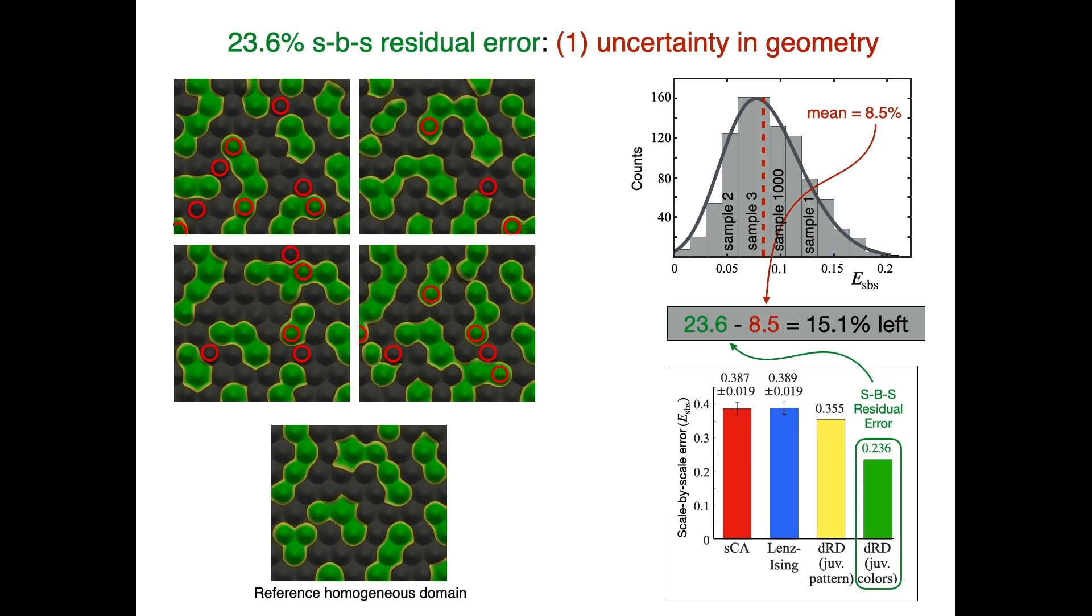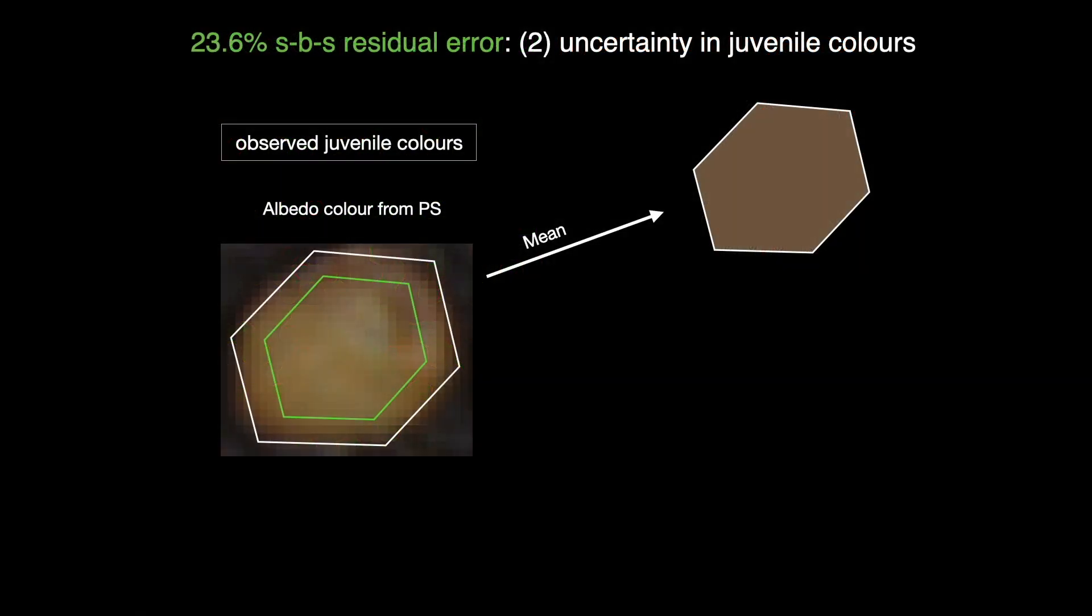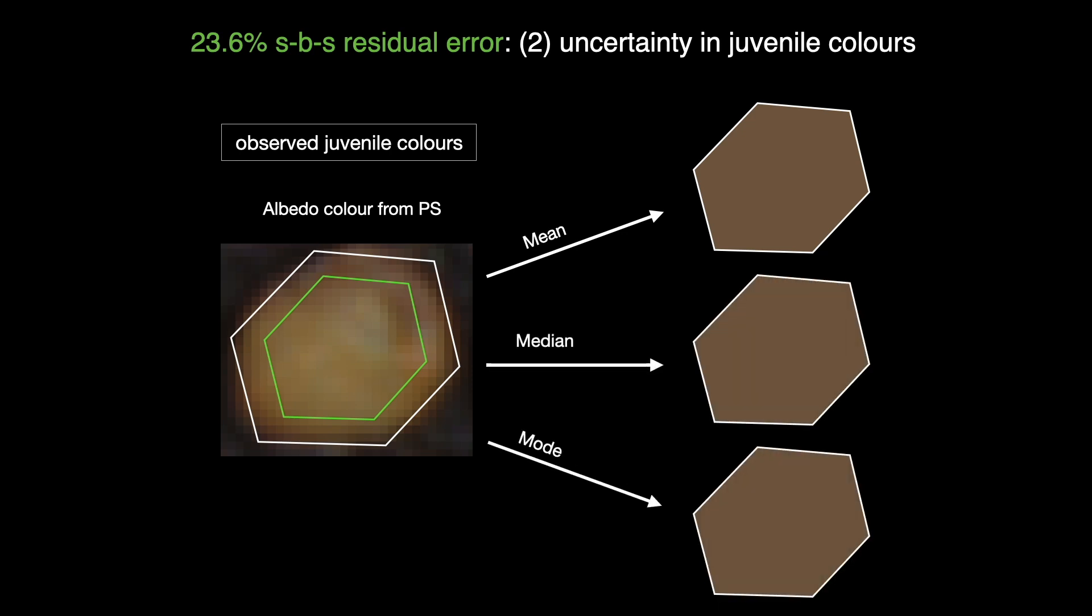But what is the source of the remaining 15%? The color that we give to a scale is the mean value among the pixels within that scale. However, using the mean is arbitrary. If we use either the median or the mode, the color difference is not perceptible by eye, but it is there, and it amounts to between 2 and 4%.